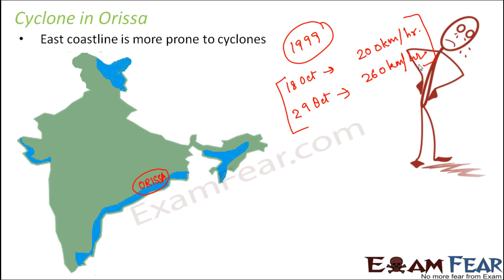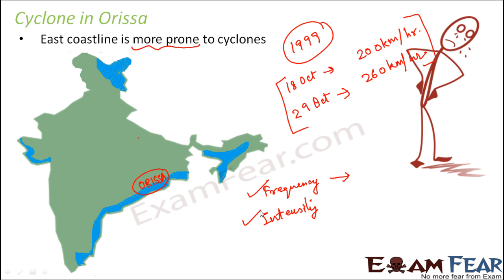The east coastline of India is more prone to cyclones in terms of both frequency and intensity. Frequency refers to how many times cyclones have occurred in a region, while intensity refers to how strong the cyclone was — how high the wind speeds were. In both respects, the east coastline is very much at risk, as demonstrated by the two consecutive cyclones that hit Orissa in the same month with tremendous wind speeds.